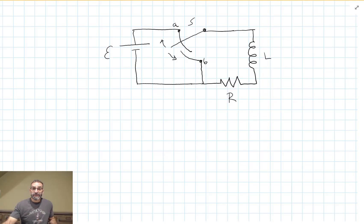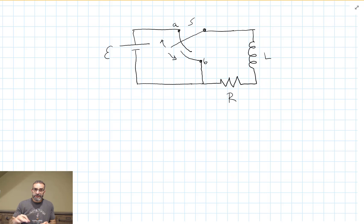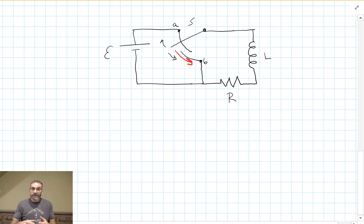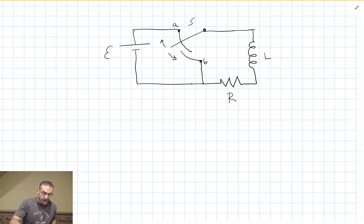What we just looked at was very similar to charging a capacitor. Now let's take a look at the similar situation to discharging the capacitor. We want to be able to remove the battery but allow current to continue to flow. This type of switch is one way to do that. As you slide the switch from A to B, you never lose an electrical connection, and when it gets to B you've removed the battery from the circuit but allowed a path for the current to flow the whole time.